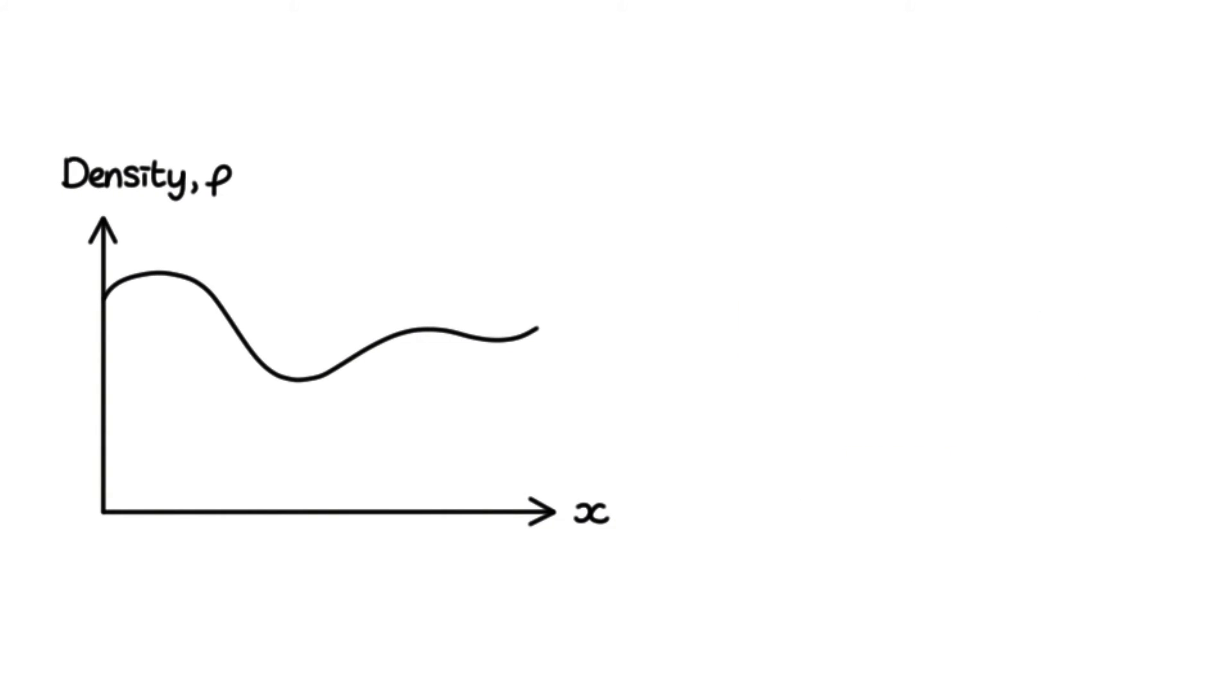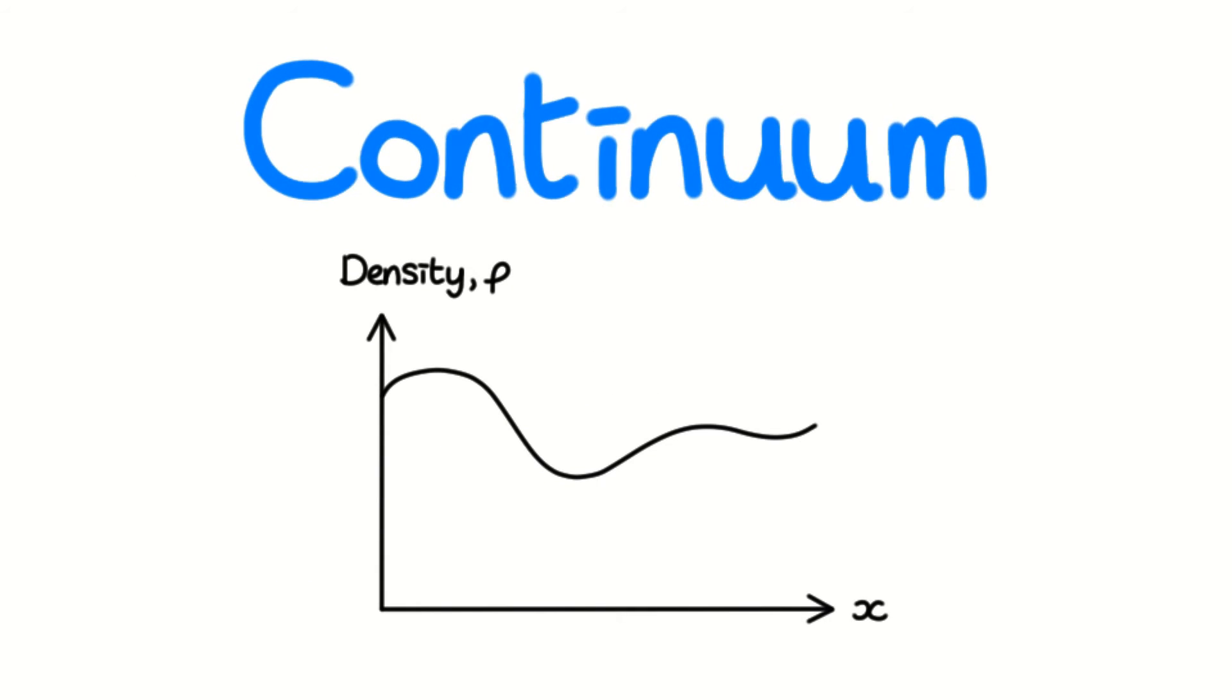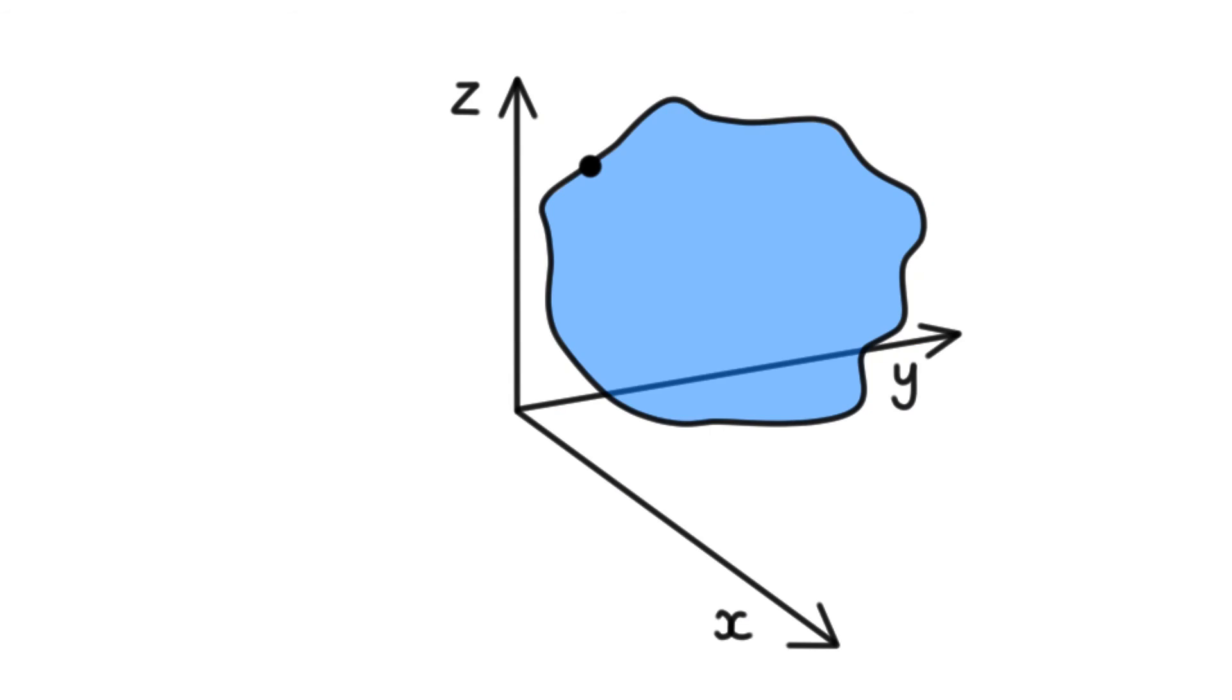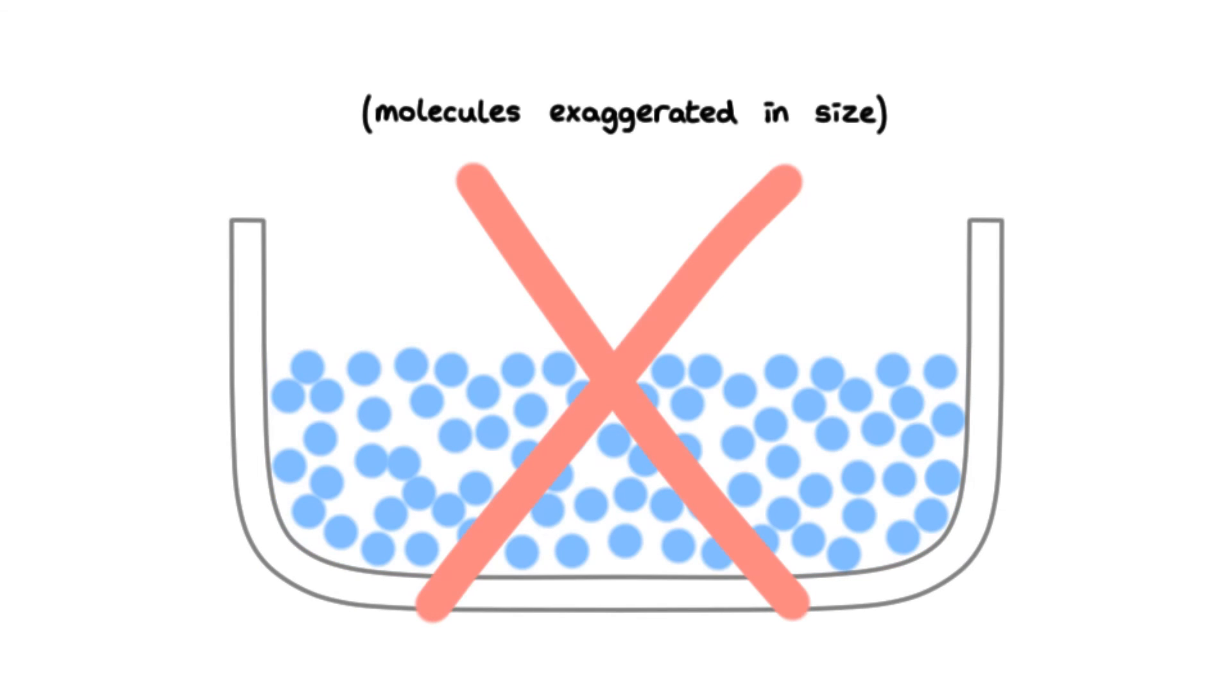We therefore normally model fluids by assuming they are a continuum. A continuum is a body whose variations in properties are so smooth that they can be differentiated. This continuum assumption involves us viewing fluids at a large enough scale, that we can assume they are bodies of continuous mass, filling the space it occupies, rather than looking at a fluid as a load of discrete molecules.